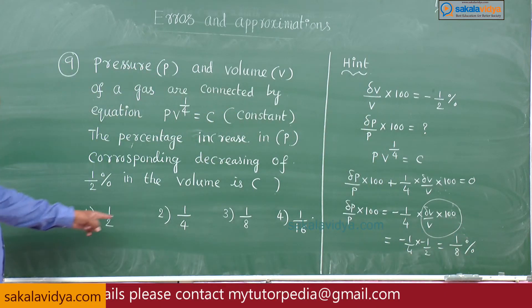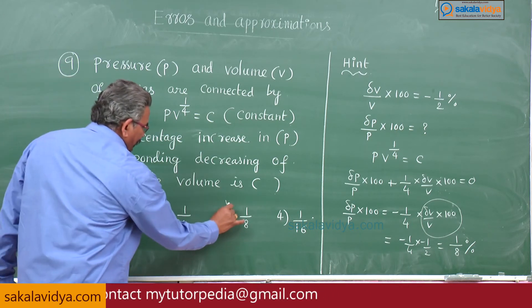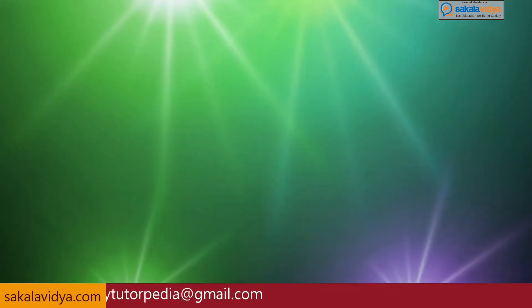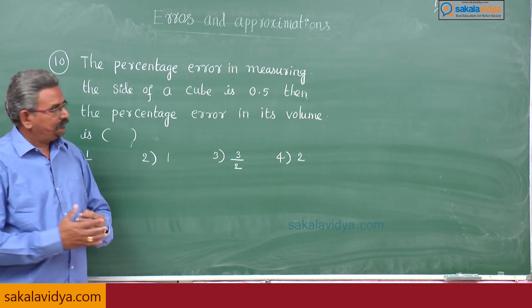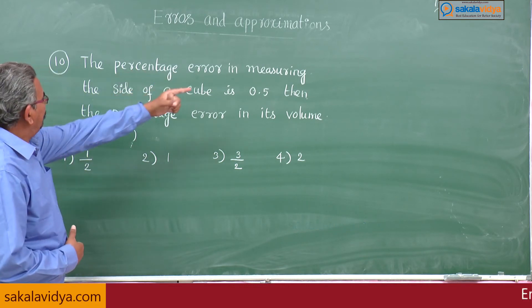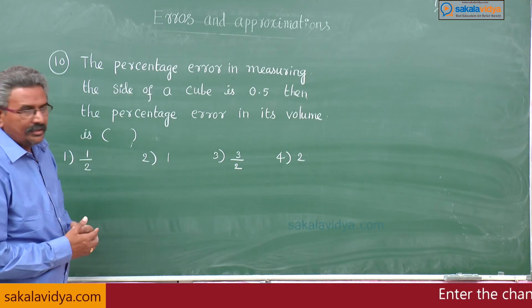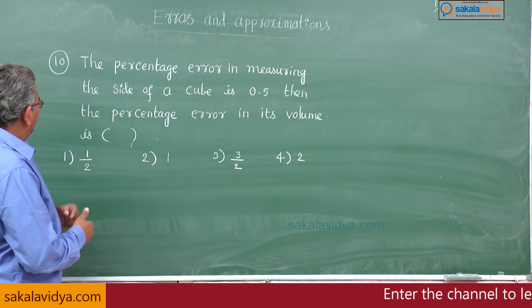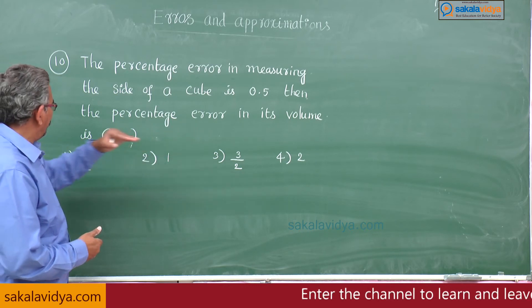The third option is the right answer. Tenth problem: the percentage error in measuring the side of a cube is 0.5, then what is the percentage error in its volume?